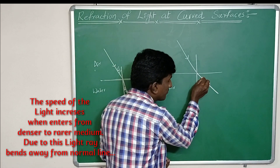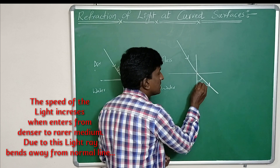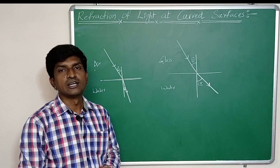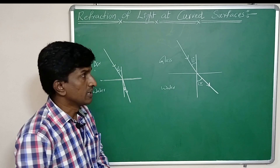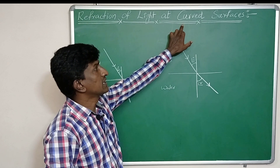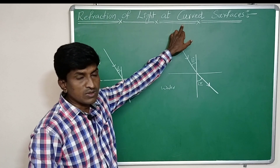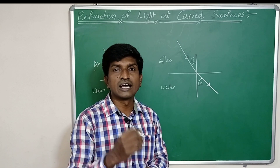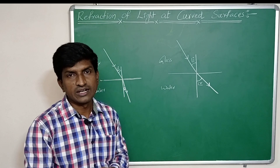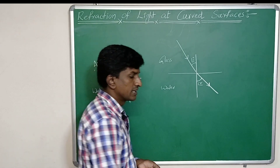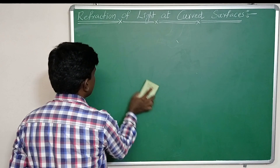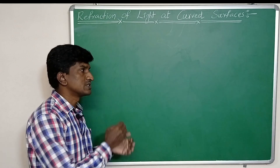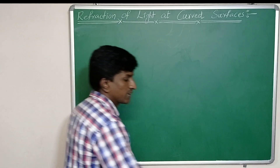The angle the refracted light ray makes with the normal line is the angle of refraction, and the incident angle is the angle of incidence. This is about refraction. Now in this class we are going to discuss the refraction of light at curved surfaces — the behavior of light when it incidents on a curved surface separating denser and rarer media.